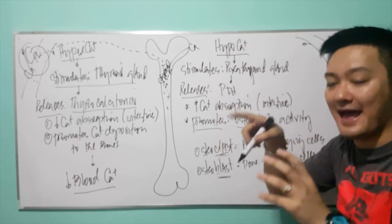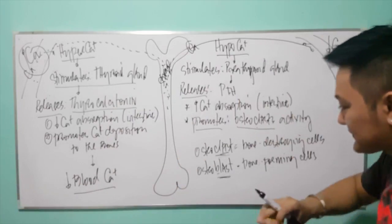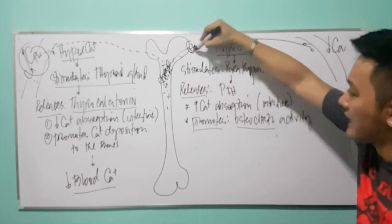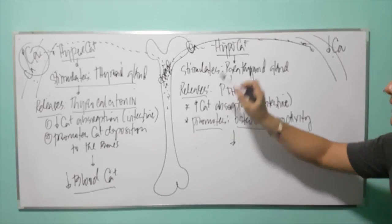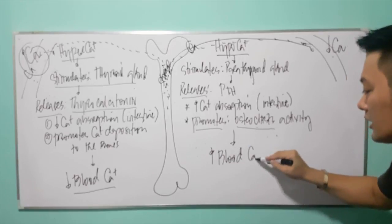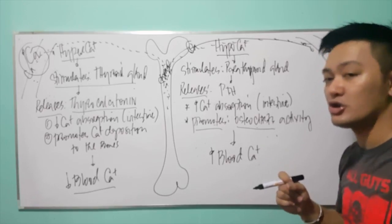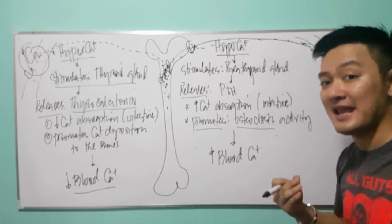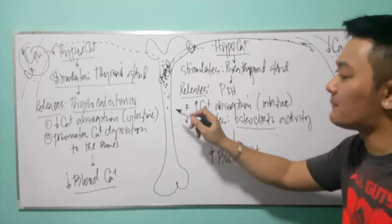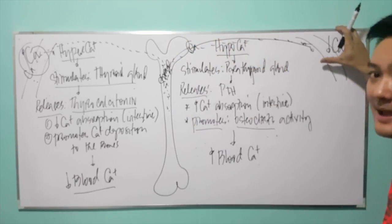That calcium gets out from the bone and goes into the bloodstream, so PTH increases blood calcium level. In your examination, there is a condition called osteoporosis — brittling of the bone. Expect that a patient with osteoporosis may have hypercalcemia, because if there is brittling of the bone, calcium from the bone gets out and enters the bloodstream, causing hypercalcemia.